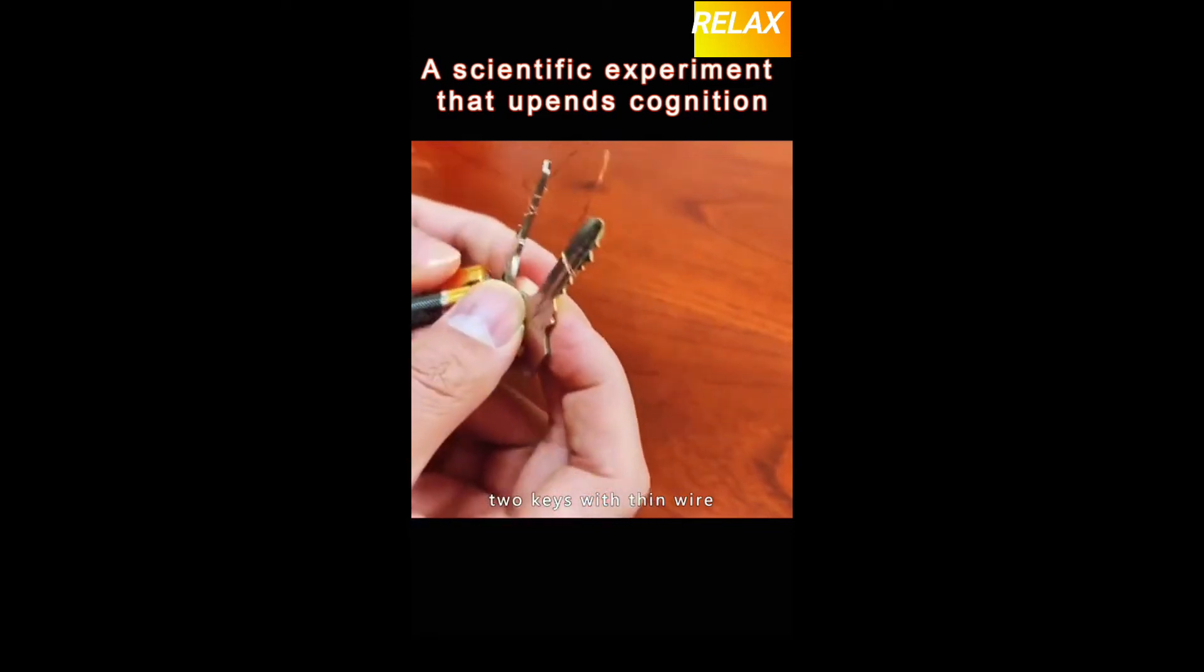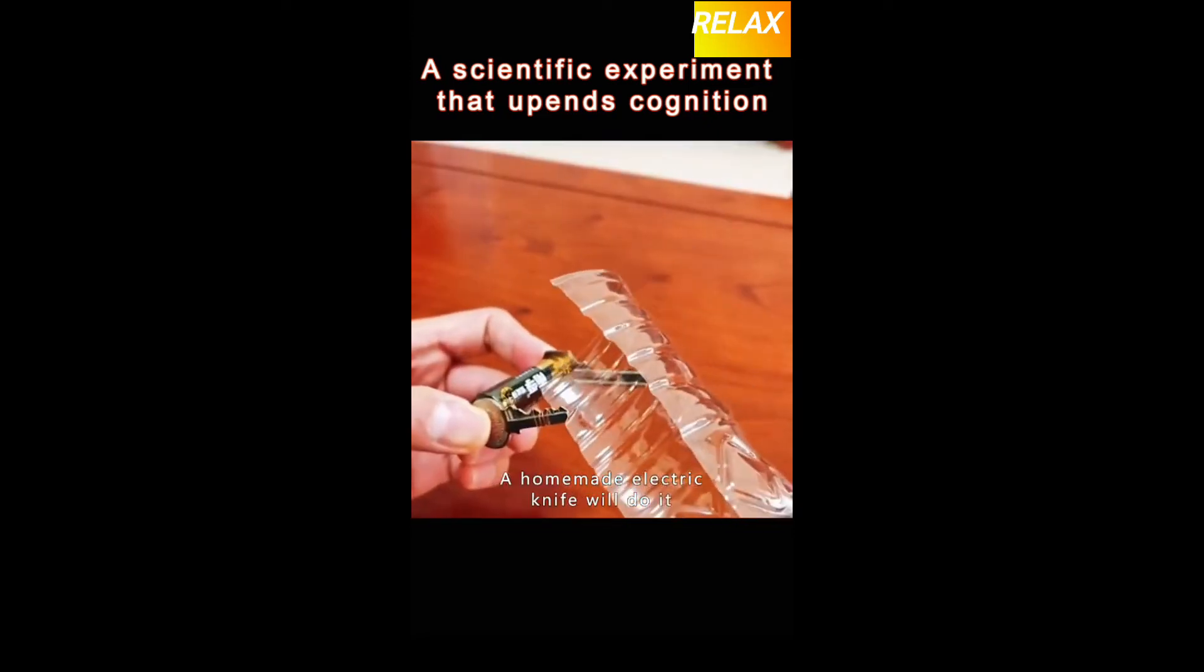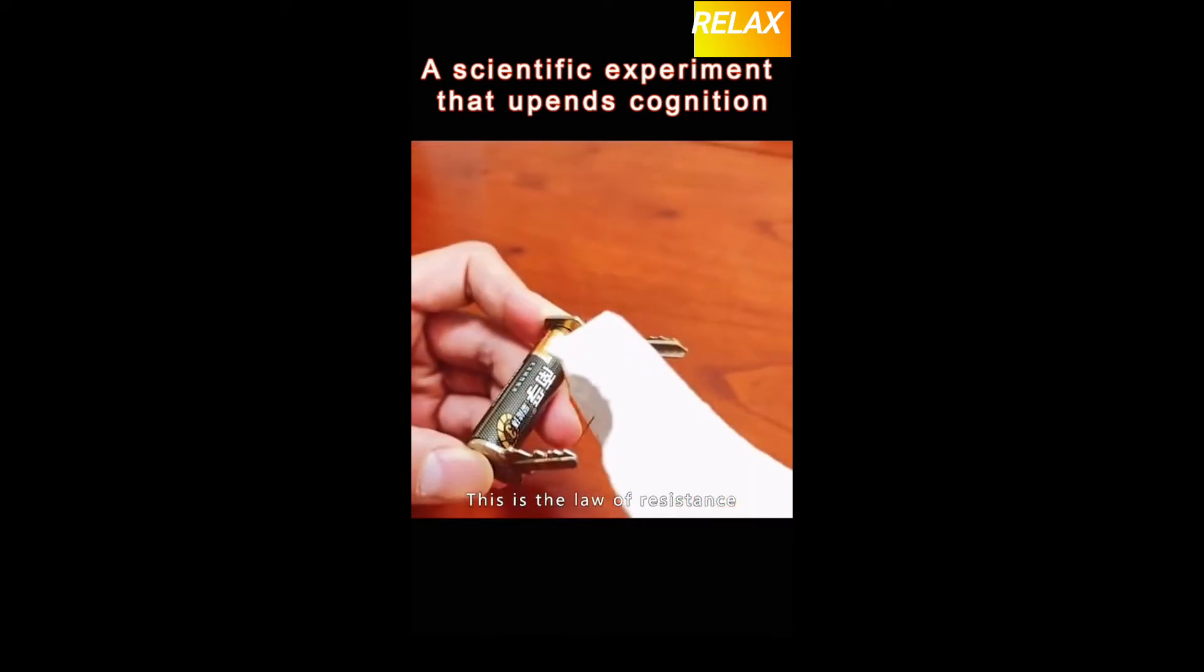Twine and join the two keys with thin wire. Align the positive and negative electrodes of the dry cell. A homemade electric knife will do it. This is the law of resistance.